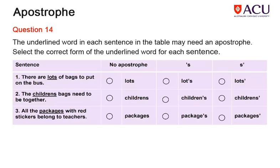Apostrophes are an aspect of punctuation that could also be in the test. These sentences are about a school excursion. An apostrophe is used in a contraction to account for a missing letter, as in 'won't' instead of 'will not'. It is used to show possession or ownership for both singular and plural nouns, but is never used to indicate the plural form. In sentence one, 'lots' is plural so no apostrophe is required. In sentence two, 'children's' shows ownership of the bags, so an apostrophe is used. In sentence three, 'packages' is plural, so no apostrophe is required.